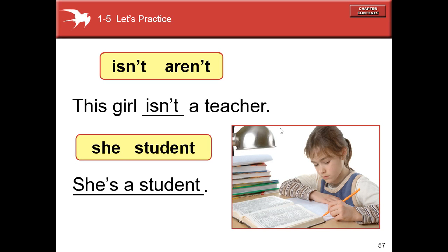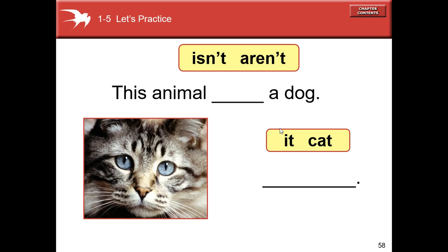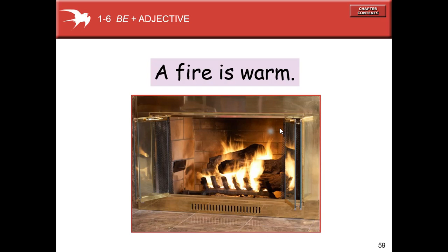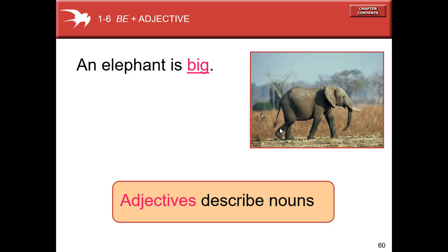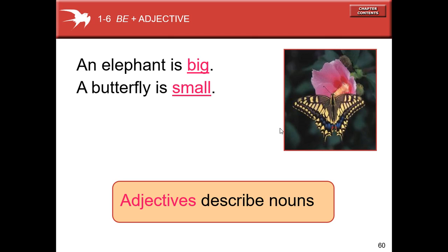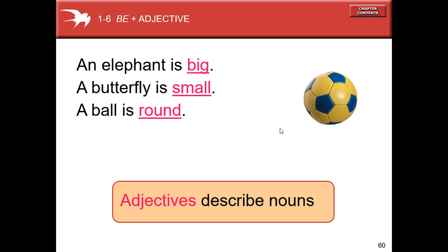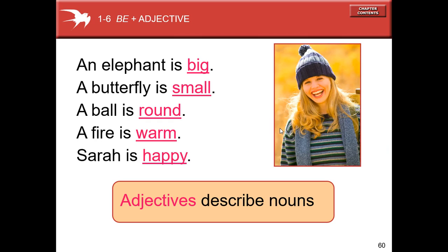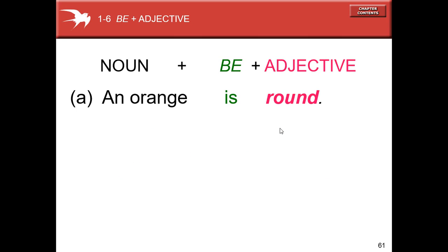Now the verb to be plus an adjective. A fire is warm — I love this picture. An elephant is big. An adjective describes nouns — these adjectives describe nouns. A butterfly is small, a ball is round, a fire is warm, Sarah is happy.